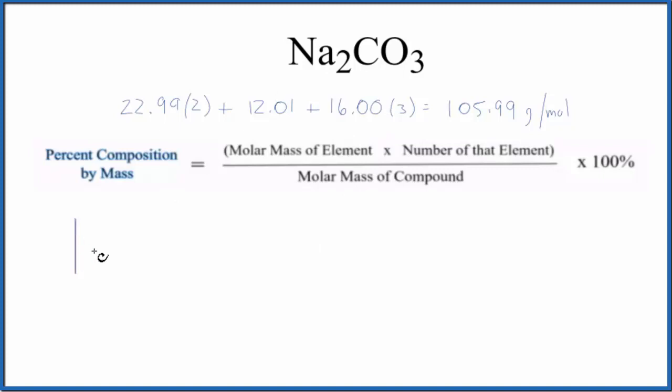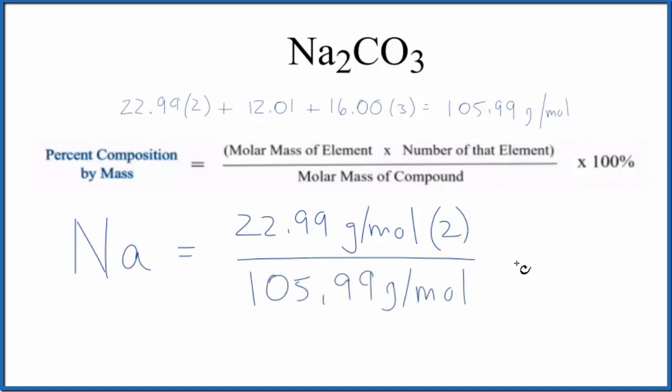Start with the sodium. Sodium on the periodic table, 22.99 grams per mole and we're going to multiply that by the number of the element. There are two sodium atoms. Put a 2 there. Divide everything by the molar mass of the compound which we just found. We multiply by a hundred. That'll give us a percent and notice that the grams per mole, we have it on the top and the bottom, that's going to cancel out.